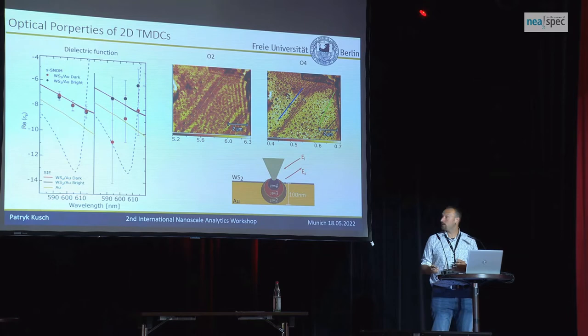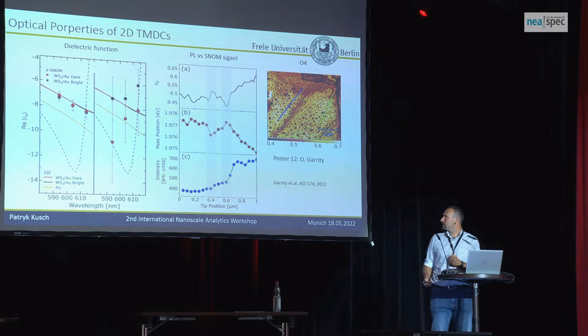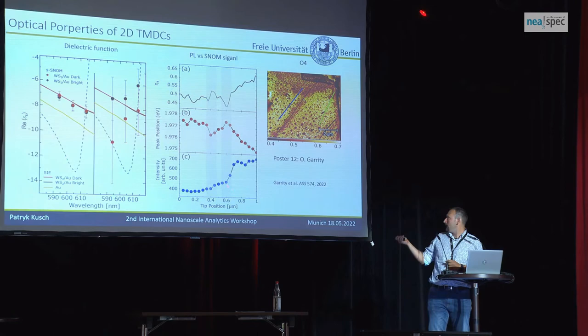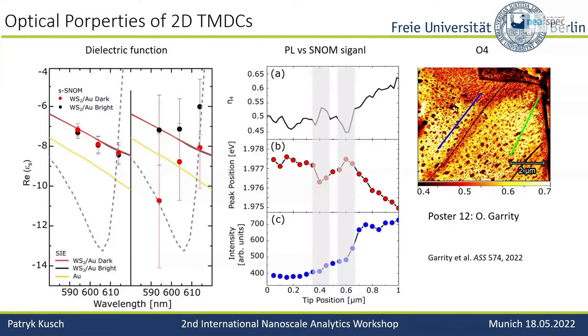Coming from that, we go for tip-enhanced PL — that's really cool and interesting, as I also come from the field of tip-enhanced Raman and tip-enhanced PL. We make a line scan from the dark area to the bright area of tip-enhanced PL. The intensity goes up once you reach the border — the edge — and then it's continuously high. The resolution is in the nanometer range, several tens of nanometers depending on the step. More interestingly, when we look at the PL peak position, we see that whenever the SNOM signal goes up, the PL position shifts to lower energies, and vice versa.